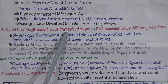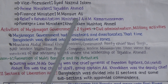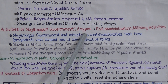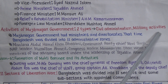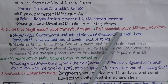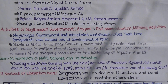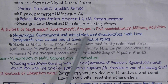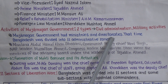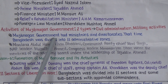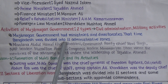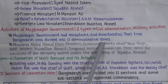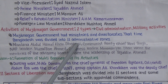There are two types of activities of Mojibnagar Government: civil administration and military activities. Mojibnagar Government had ministers and directorates like other governments. At that time, Bangladesh was divided into 11 administrative zones so that the government could administer the whole country properly.